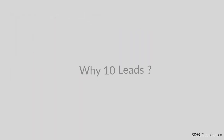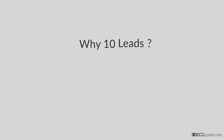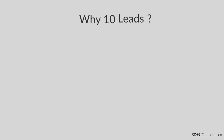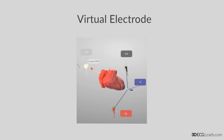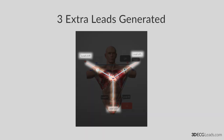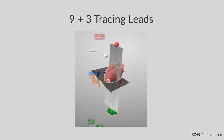So to conclude, the reason why a 12-lead ECG has 10 leads is that one of these leads is the grounding, and with the aid of a virtual electrode, three extra leads can be generated. So nine electrode leads can generate nine plus three tracing leads.